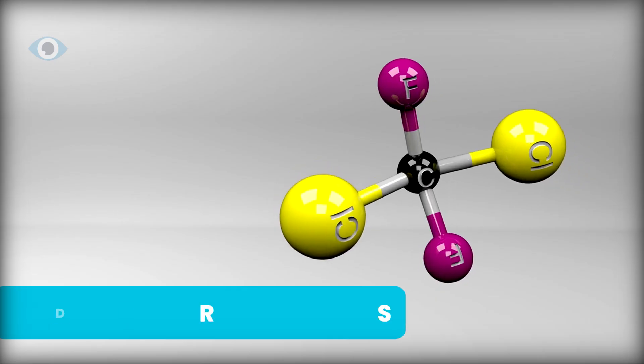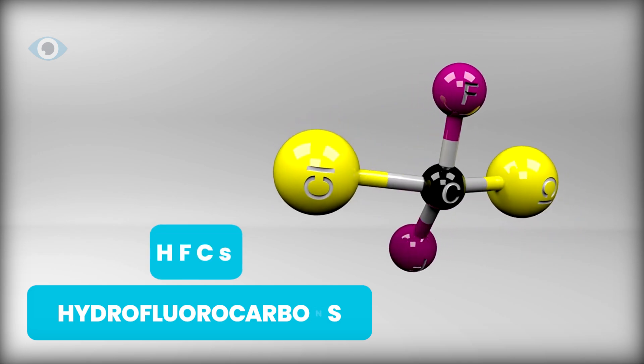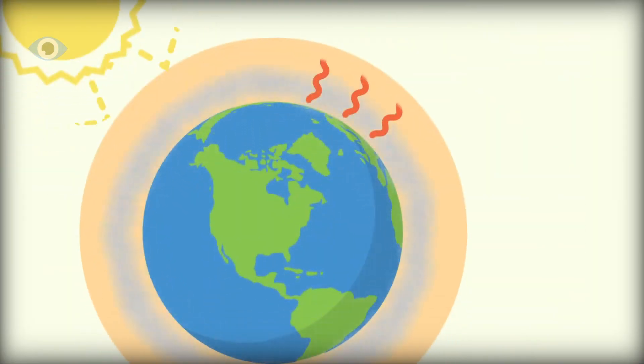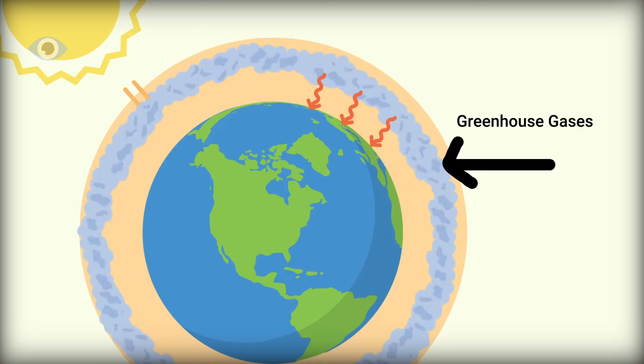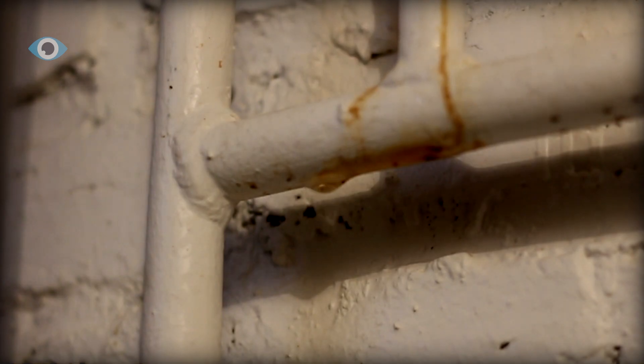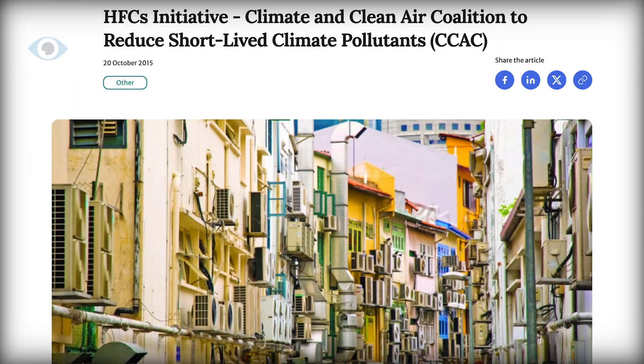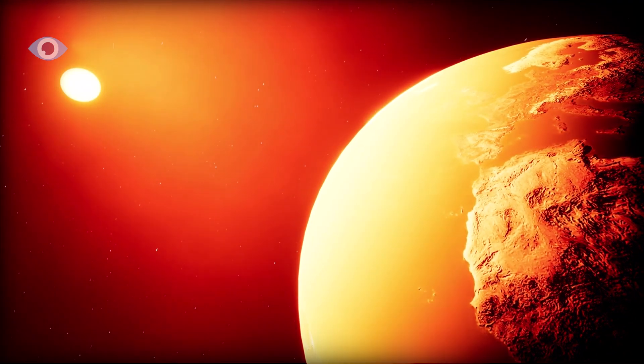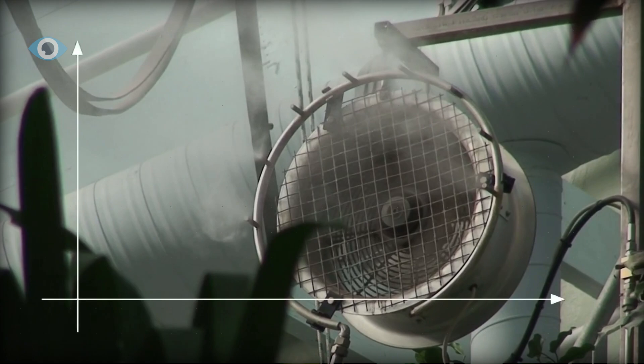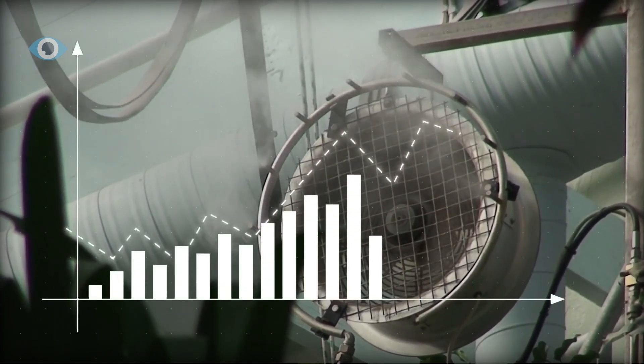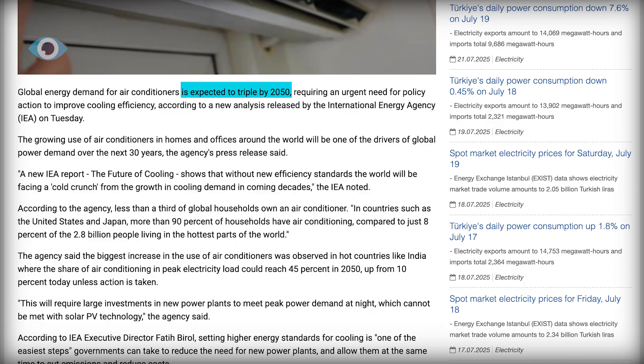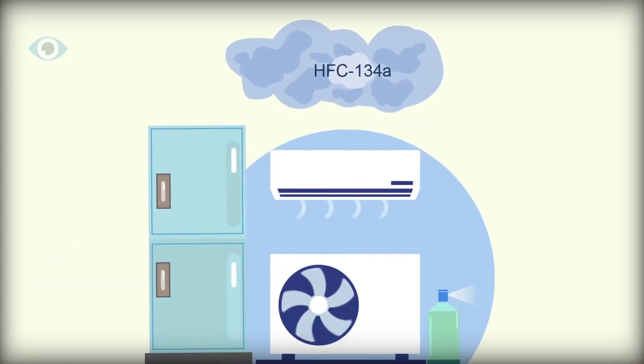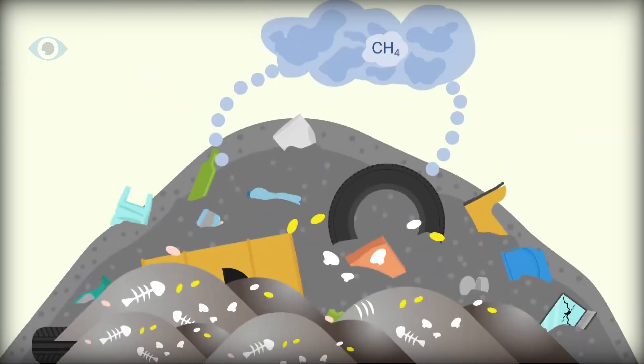The catch? These systems rely on hydrofluorocarbons, HFCs, powerful greenhouse gases that can trap thousands of times more heat than CO2. Even small leaks, common over the lifetime of a unit, can have a massive climate impact. According to the UN, HFC emissions could warm the planet by up to 0.5 degrees Celsius by 2100 if left unchecked. Add to that the rising global demand for air conditioning, projected to triple by 2050, and we're looking at a refrigeration-driven climate crisis unless we find better alternatives.